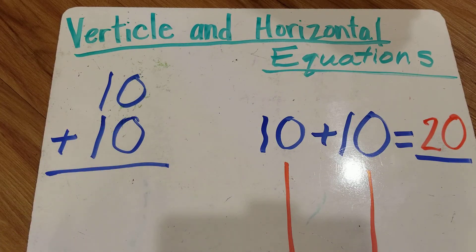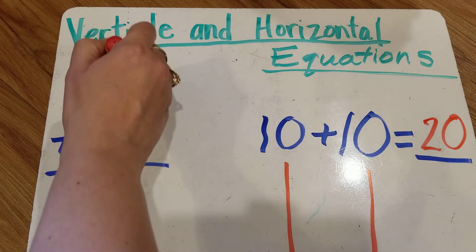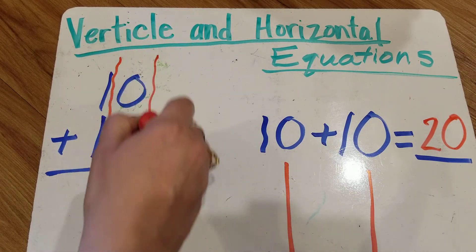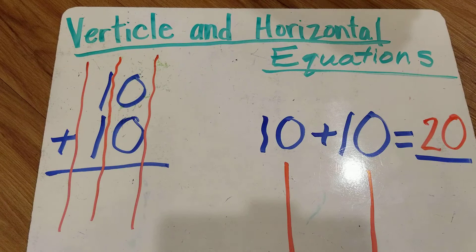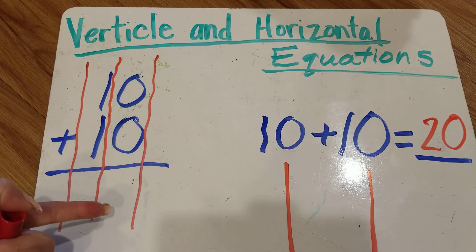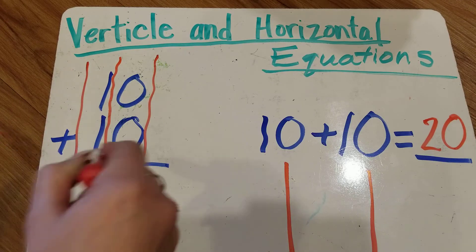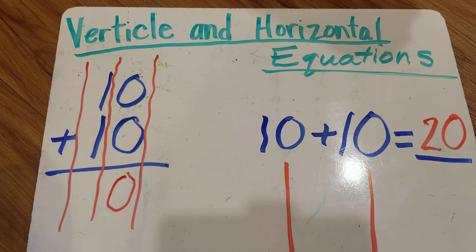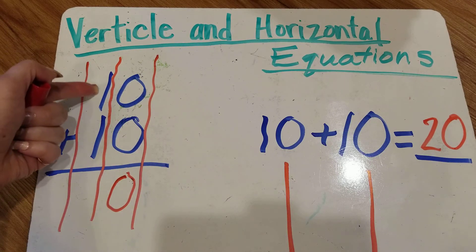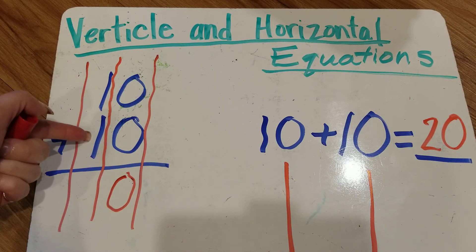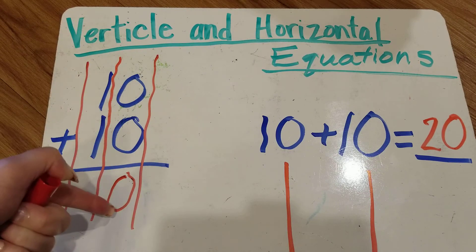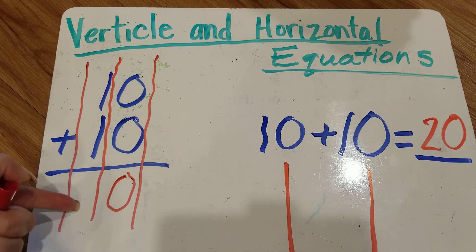Now when we do our vertical we can use another strategy. It's going down like this. In the ones column there's two zeros. So if we add two zeros it's gonna be zero. One 10 and another 10 in the tens column. This is the ones column. This is the tens column.